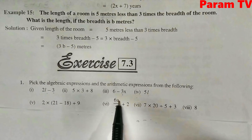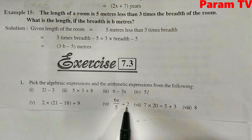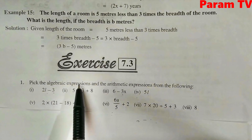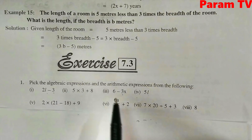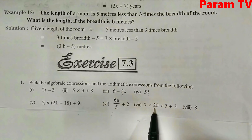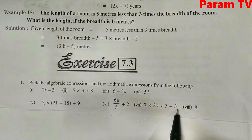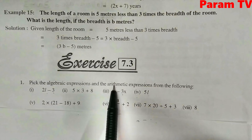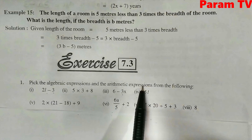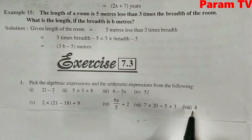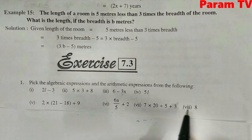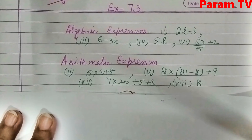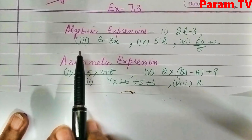Next is 6A upon 5 plus 2 — it has A, so it is an algebraic expression. Then 7 into 20 divided by 5 plus 3 — only numbers are involved, that's why this is an arithmetic expression. The 8th part is also an arithmetic expression. Question number 1 can be summarized accordingly.